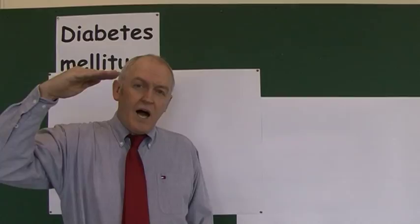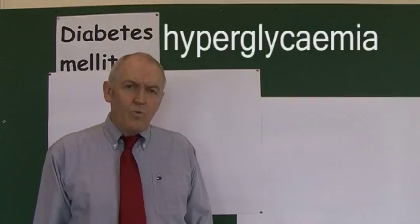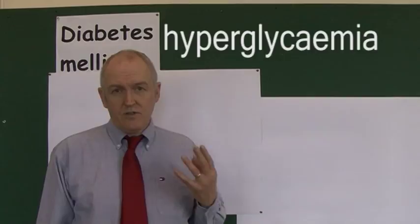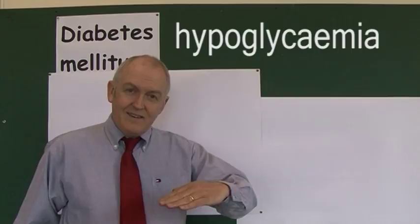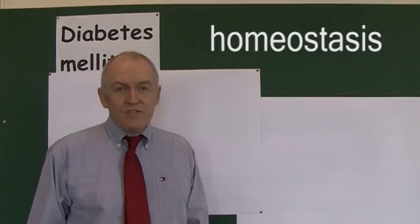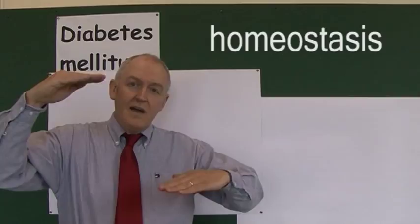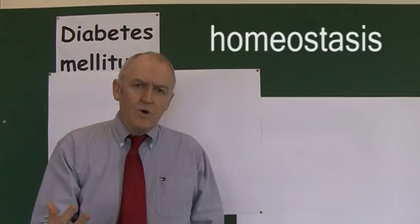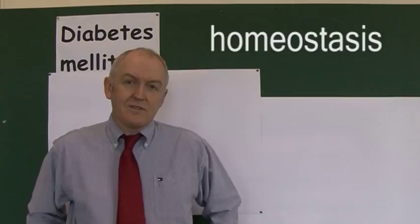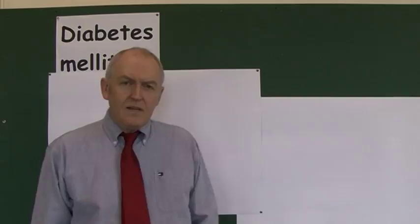We always need some glucose in the blood, and we want just the right amount. If there's too much, that's called hyperglycemia — 'hyper' always means high. We don't want hyperglycemia. But we also don't want hypoglycemia — we don't want it to go too low. So we need it to be homeostatically regulated: not too low (hypoglycemia), not too high (hyperglycemia). Both of these states are abnormal, which is why we have clinical words for them.